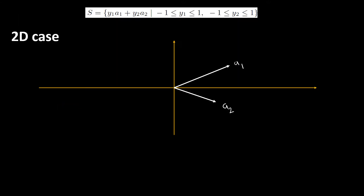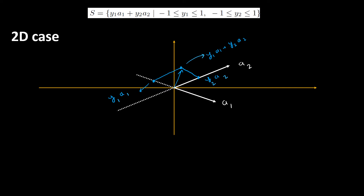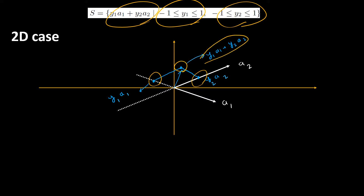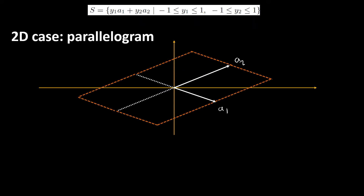To better understand the problem, I will lay it out pictorially. Suppose two independent vectors a1 and a2, both in R2, are given. Since y1 and y2 range between negative 1 and 1, we go along the dotted lines. The expression y1·a1 + y2·a2 is a linear combination of arbitrary points on those vectors. If we do this process for all points, we get a parallelogram. Our goal is to represent this parallelogram in terms of hyperplanes or half-spaces.